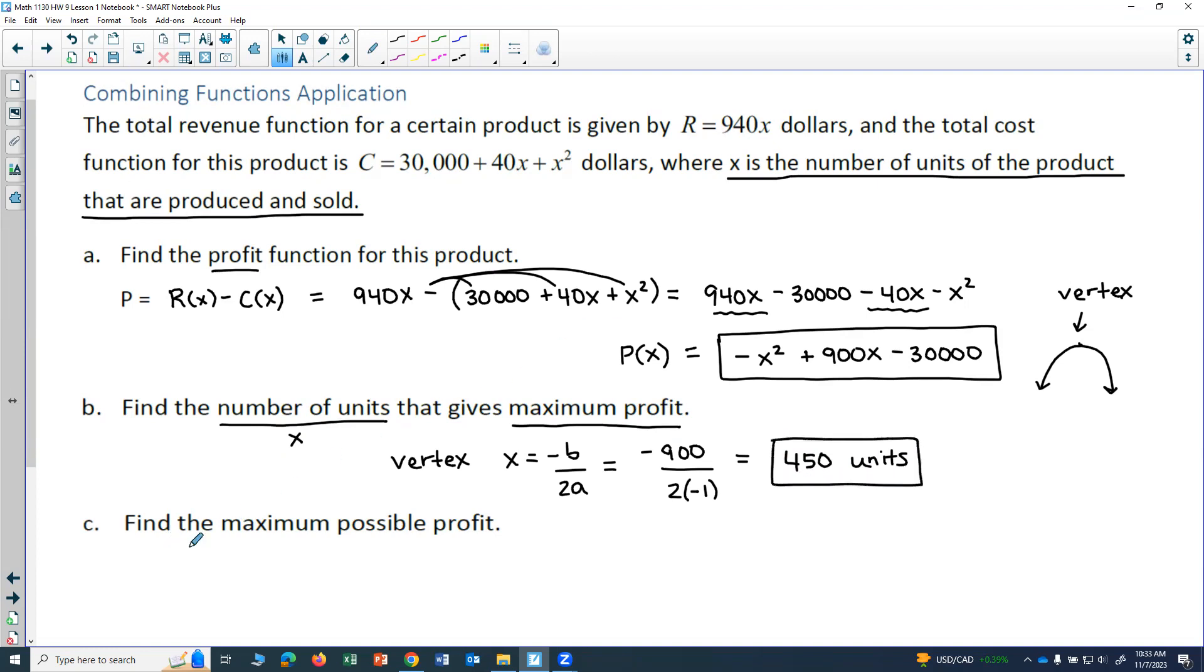And then they say, find the maximum possible profit. So that would be the y in this case. So I'm going to go ahead and do P(450). Because we just found that the x value at the vertex is 450. So I have to do -(450)² + 900(450) - 30,000.